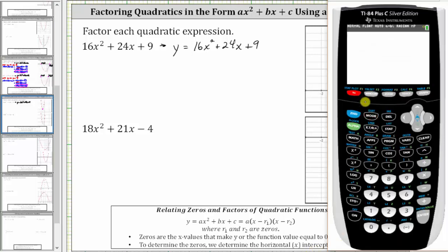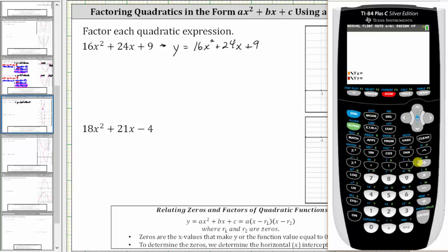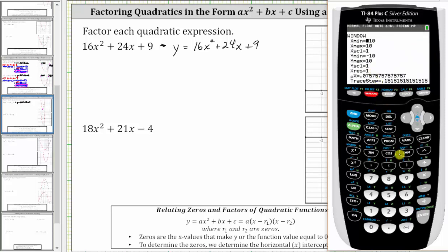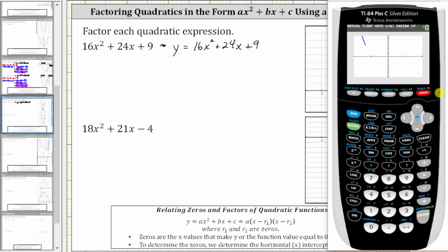So we press y equals — I've already entered the function to save some time. Let's press zoom six for the standard window. Let's adjust the horizontal axis to start at negative two and go out to positive two; this will give us a better view. So we press window, x min negative two, enter, x max positive two, enter, and then graph. This is a much better view, and now we will calculate the zero at this location.